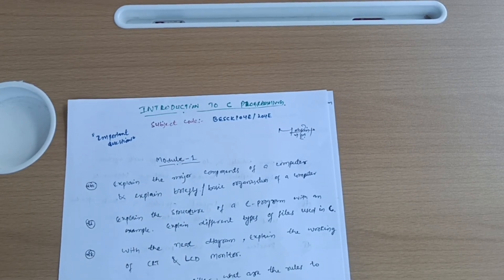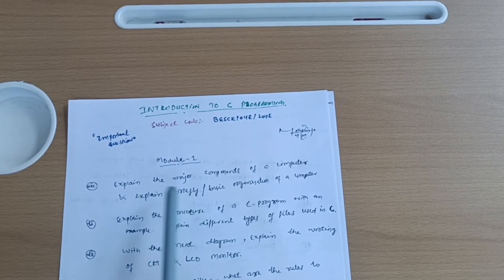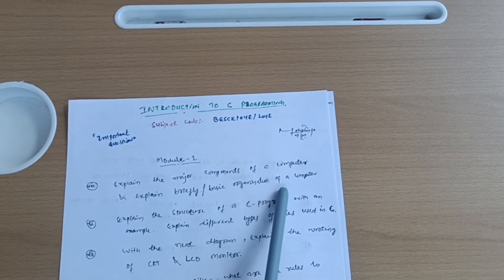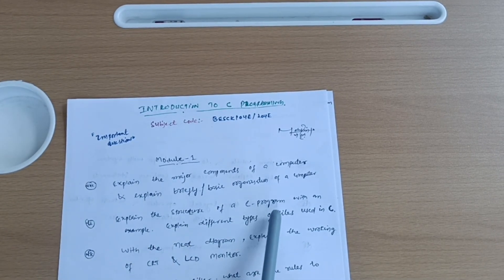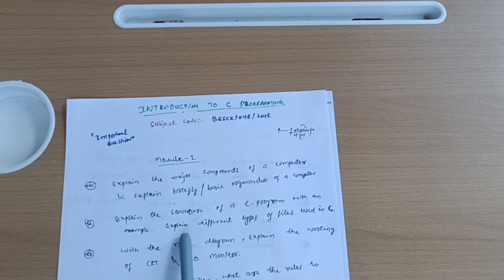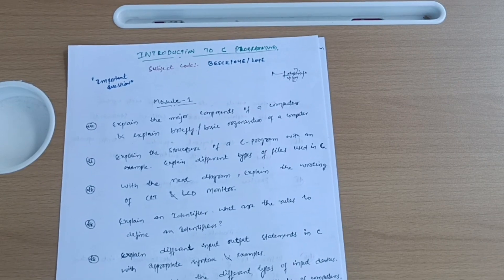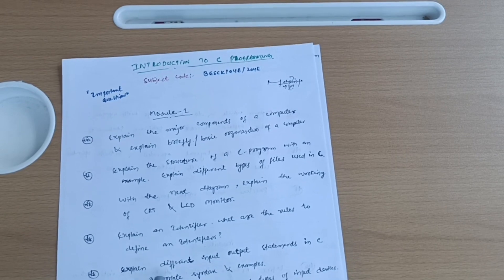From module second we have the possibility of questions: explain the major components of the computer and explain briefly, or sometimes they may ask you explain basic organization of a computer. Next is explain the structure of a C program with example. Explain different types of files used in C with a neat diagram. Explain the working of CRT and LCD monitor.